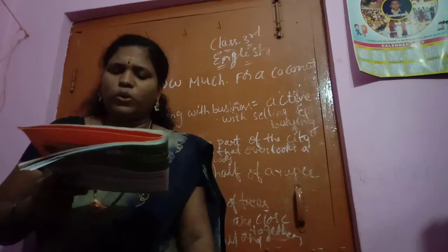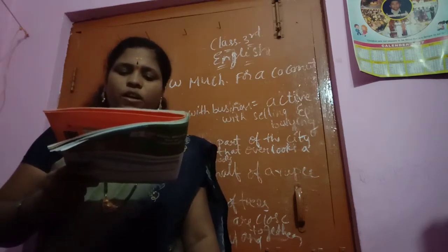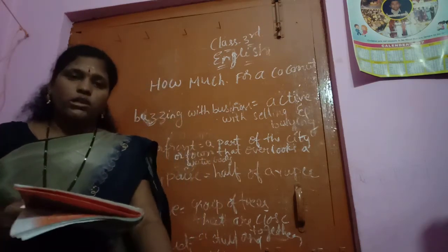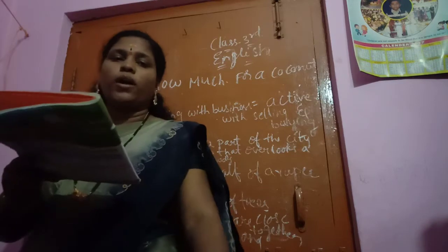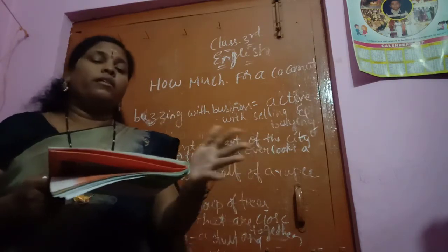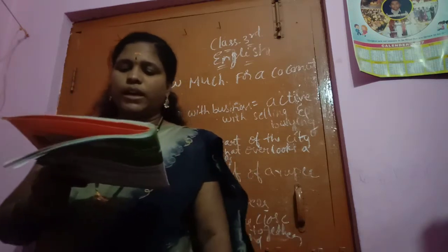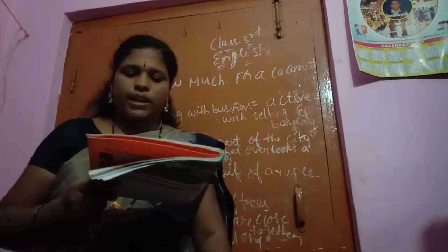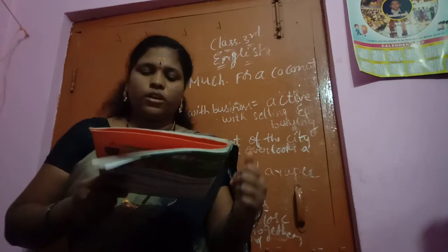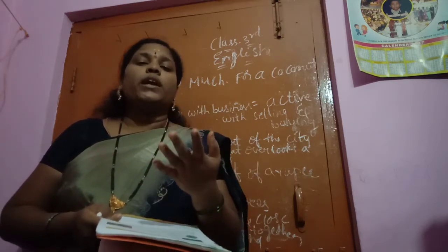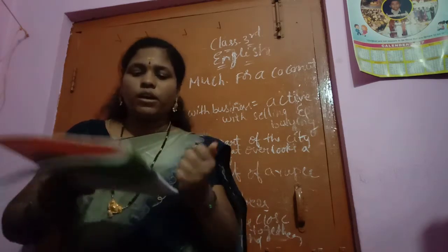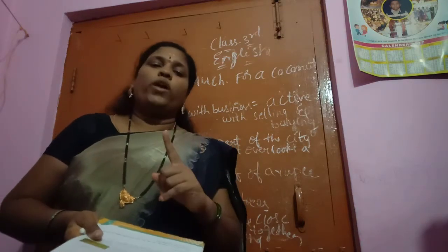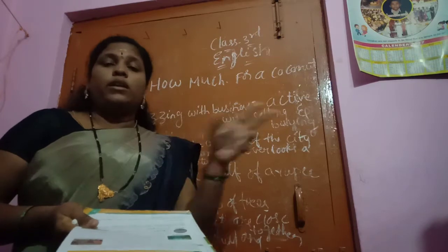Bikkubai walked to the waterfront and looked around. Finally he found a coconut seller and asked, 'How much are you charging for one coconut?' — meaning what is the cost of one coconut? The seller said, 'Only one rupee.' In the big market it was two rupees, but at the waterfront it was one rupee.